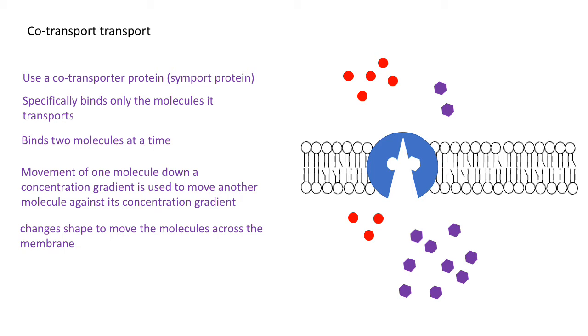The sodium-amino acid co-transporter in epithelial cells of the ileum will only bind sodium ions and amino acids. So they're specific; they bind two molecules at a time. The key thing is they're moving one molecule down its concentration gradient, another against its concentration gradient, and the shape changes when those molecules bind to allow those molecules to move to the other side of the membrane.